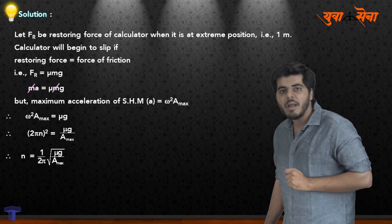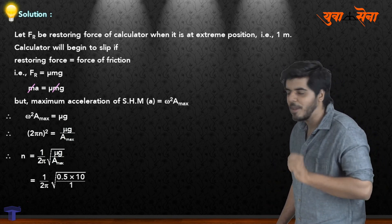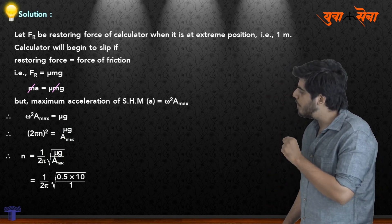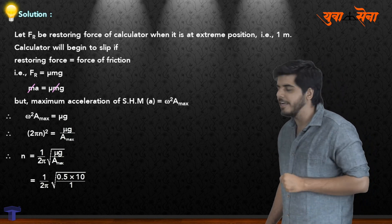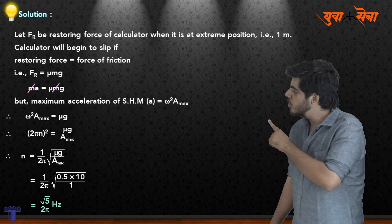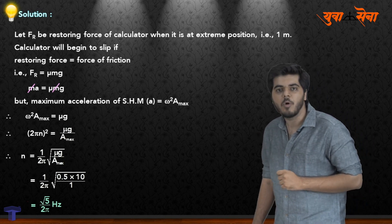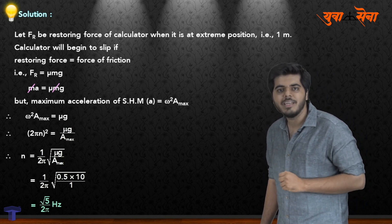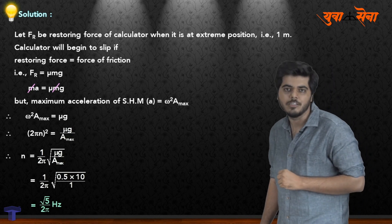Now I am going to substitute my values. Substituting, I get 1 upon 2 pi times the square root of 0.5 times 10. 0.5 times 10 equals 5. So my answer is root 5 upon 2 pi hertz. Therefore, my final answer is root 5 upon 2 pi hertz.